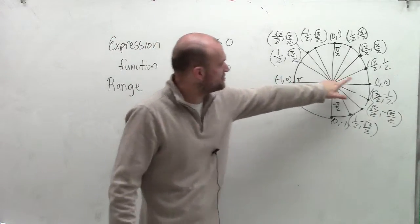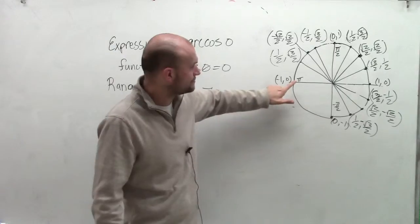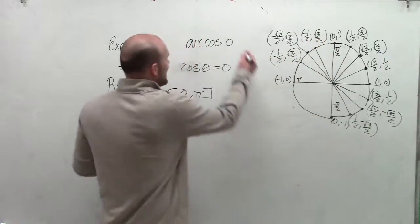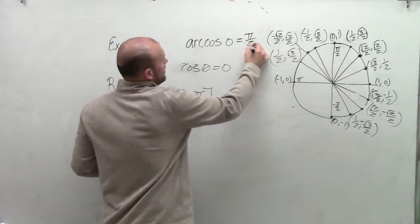When looking at the x values between 0 and pi, there's only one angle where the x value equals 0. That's at the angle pi over 2.